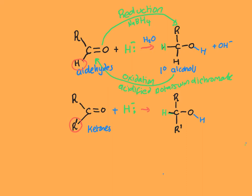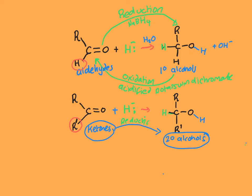Ketones, when they undergo reduction, form secondary alcohols — when reacted with sodium borohydride or sodium tetrahydroborate. And conversely, when secondary alcohols undergo oxidation, they are oxidised back to ketones.